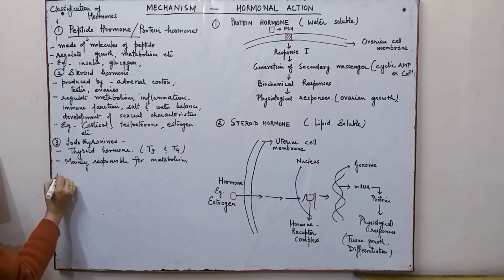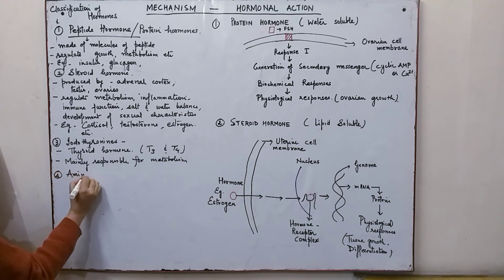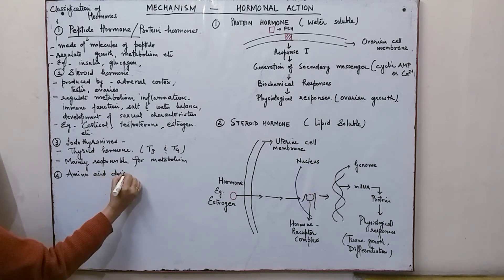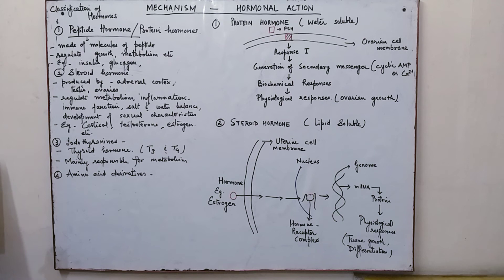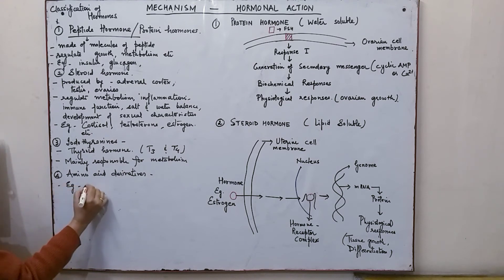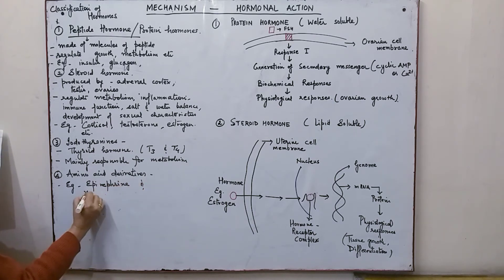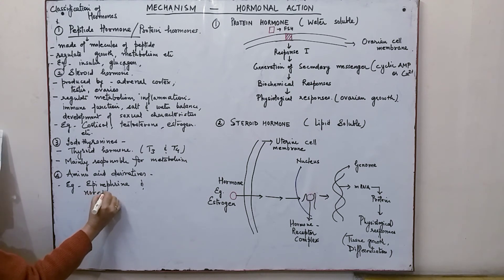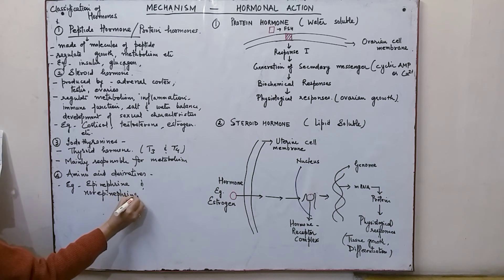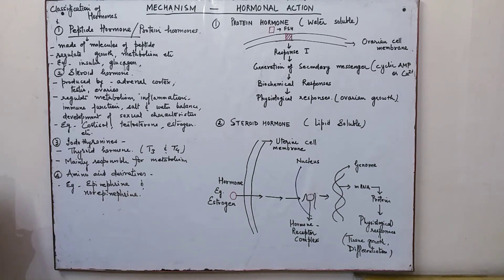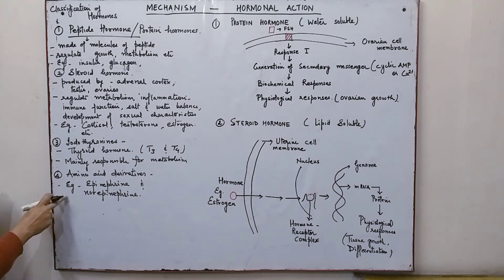The fourth category is amino acid derivatives, which are synthesized in the medulla of the adrenal glands. Examples are epinephrine and norepinephrine. These are water-soluble and are stored in the endocrine cells until needed, and they bind to protein receptors on the outside surface of cells.